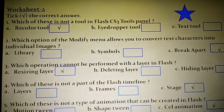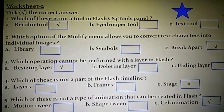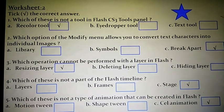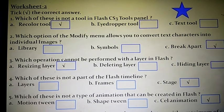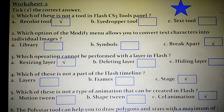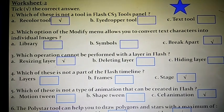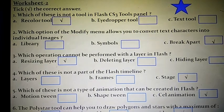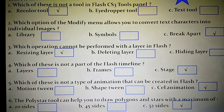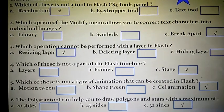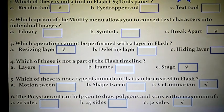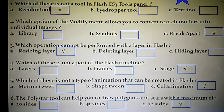Worksheet two — tick the correct answer. First: which of these is not a tool in Flash CS3 tools panel? Correct answer: recolor tool. Second: which modify menu option converts text characters into individual images? Break apart. Third: which operation cannot be performed with a layer in flash? Resizing a layer. Fourth: which is not a part of the flash timeline? Stage. Fifth: which is not a type of animation in flash? Cell animation. Sixth: the poly star tool can draw polygons and stars with a maximum of how many sides? 32 sides.